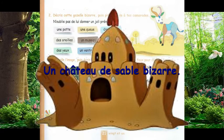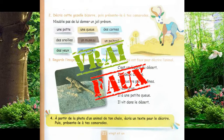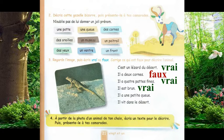Je regarde l'image. J'écris vrai ou faux. C'est un lézard du désert : vrai. Il a deux cornes : faux. Il a quatre pattes fines : vrai. Il est brun : vrai. Il a une petite queue : faux. Il vit dans le désert : vrai.